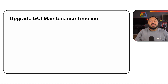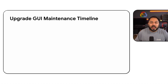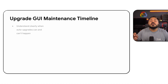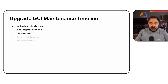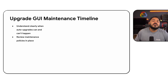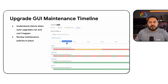Next on our list is the maintenance timeline in the upgrade user interface. This improvement provides a visual timeline in the GUI to clearly show when automatic upgrades can and cannot occur, and also allows for the review of existing maintenance policies.